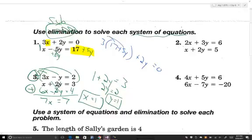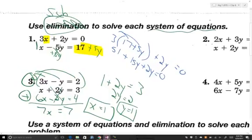I now have 51 plus 15y plus 2y equals 0. I need a little more space here.